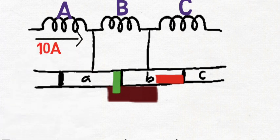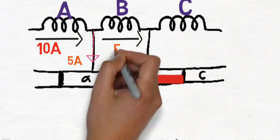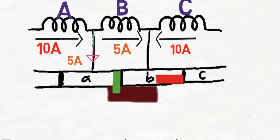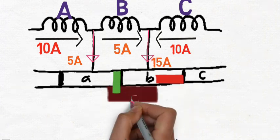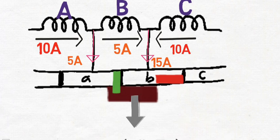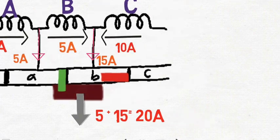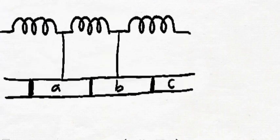Initially, current from coil A is about 10 amperes, which divides in two directions: 5 amperes toward segment A and 5 amperes toward coil B. Coil C also gives 10 amperes. The 10 amperes from coil C and 5 amperes from coil B add to 15 amperes at segment B. Then 15 amperes from segment B and 5 amperes from segment A add together, giving 20 amperes at the brush.